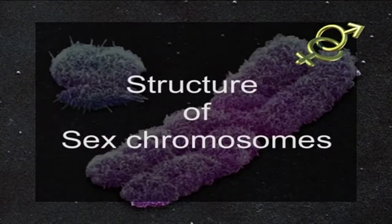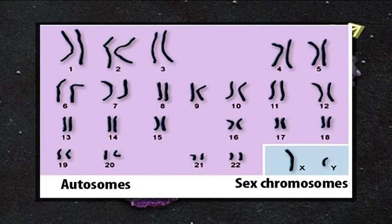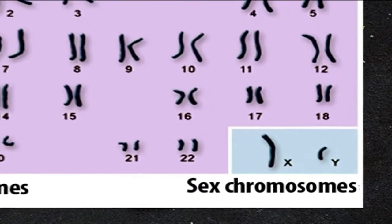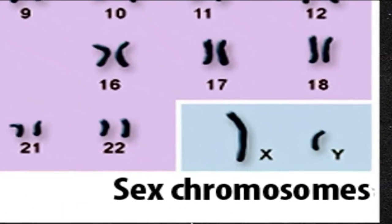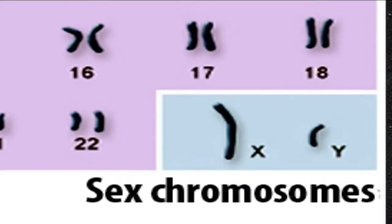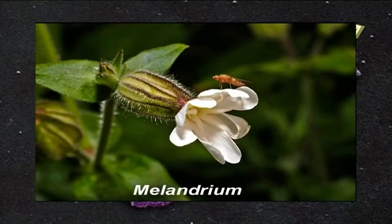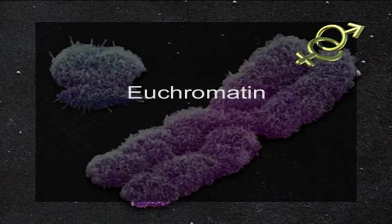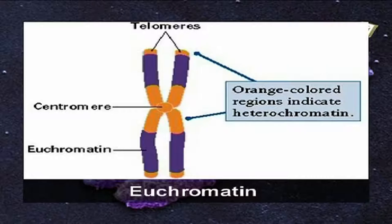Now we will discuss the structure of sex chromosomes. The X and Y chromosomes exhibit structural differences. Cytological studies have shown that the X chromosome of most organisms is a straight rod and comparatively larger than the Y chromosome. The Y chromosome is smaller in size with one end slightly curved or bent to one side in Drosophila. In humans and Melandrium no such curvature of the Y chromosome occurs. The X chromosome has a large amount of euchromatin and small amounts of heterochromatin, and therefore has a large amount of DNA material and much genetic information. The Y chromosome contains small amounts of euchromatin and large amounts of heterochromatin and has little amount of genetic information.